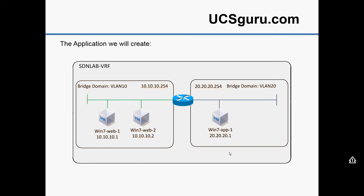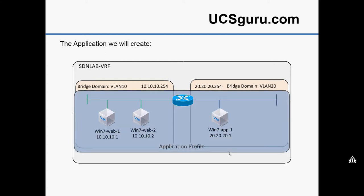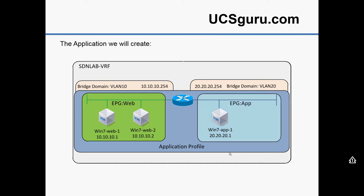Then we're going to create our bridge domains. Bridge domains are like a subnet - they're actually a broadcast construct, a flooding domain. Think of them like a layer 2 switch; you could potentially have multiple subnets on them with secondary addressing, but generally people just have one subnet per bridge domain. We're going to create our application profile, which is similar to a server profile in UCS, and create our endpoint groups - one for web, one for app. Then we create our contract between the two endpoint groups.